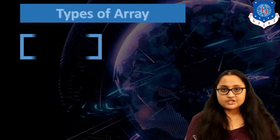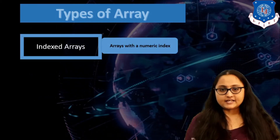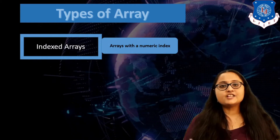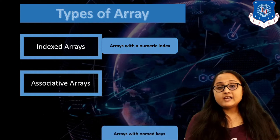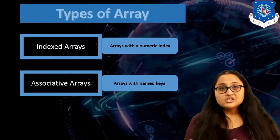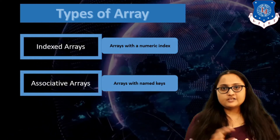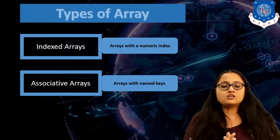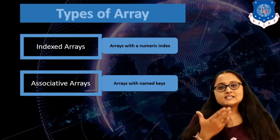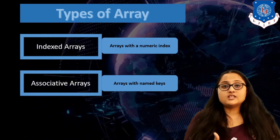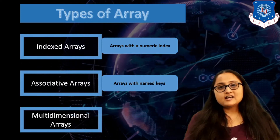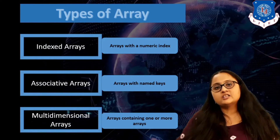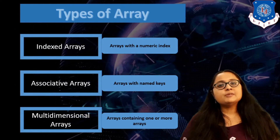The first type of array is indexed array — these are the normal arrays we have seen in every programming language, with a numeric index starting from zero. The second type is associative array: instead of a numeric index, you associate a named key with every value. Array values are associated with a named key instead of an index. The last type is multidimensional array — one array containing another array.